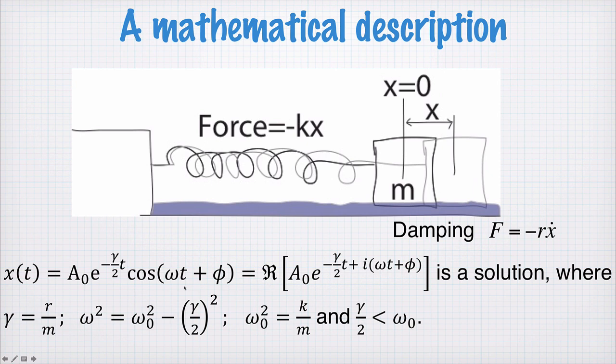The solution here, which includes an oscillation, is valid provided γ/2 is less than ω₀. If the damping here is too big, so if γ/2 is greater or equal to ω₀, then the system is so damped, it stops oscillating altogether.